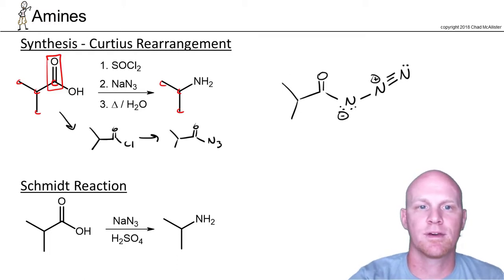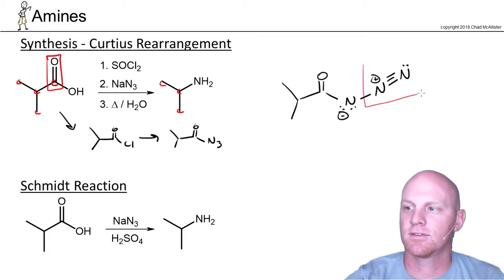So this is your acyl azide. And the big thing here to realize is that this part of the structure is a good leaving group. That's going to form N2 gas and bubble out of the solution. And this does a similar rearrangement to what we saw before.